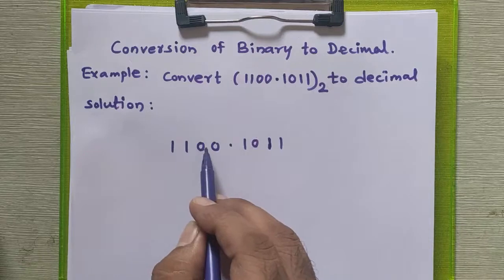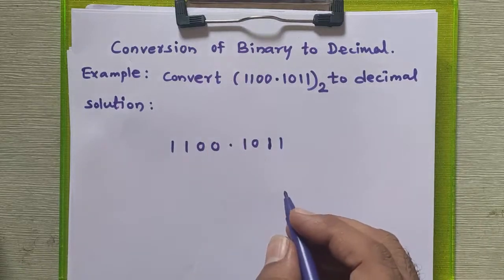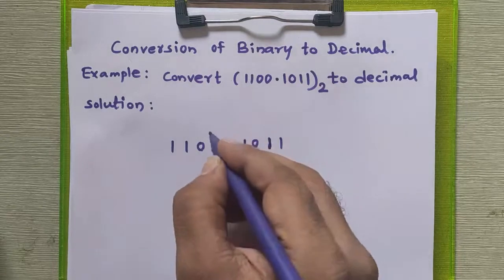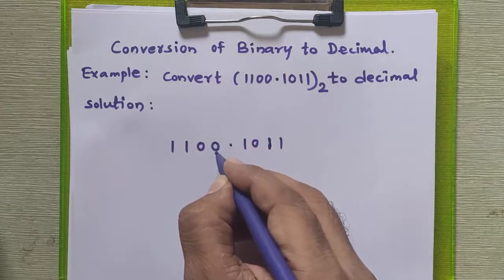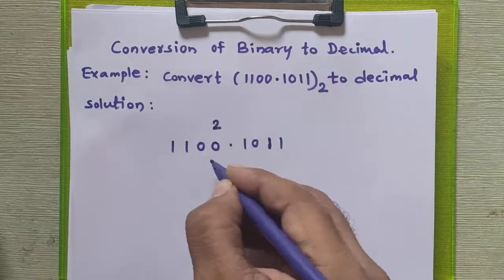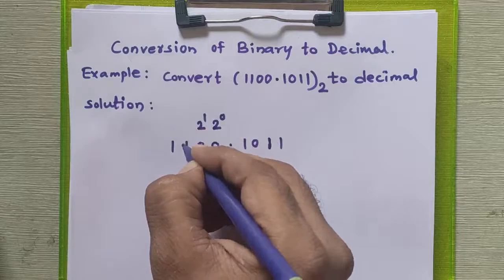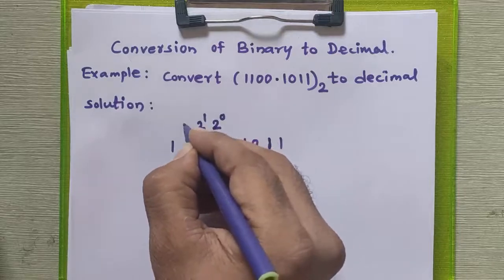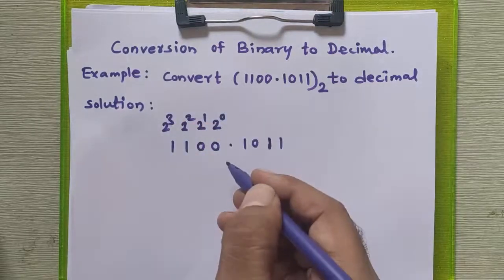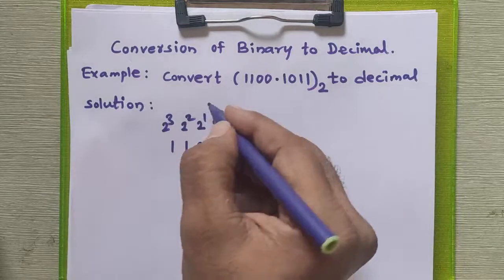To get the exact decimal equivalent of this binary number, we need to multiply each and every binary bit by its positional powers of two. For the integral part, starting from the unit place and moving right to left, the powers are: two raised to zero, two raised to one, two raised to two, two raised to three — the powers are increasing.